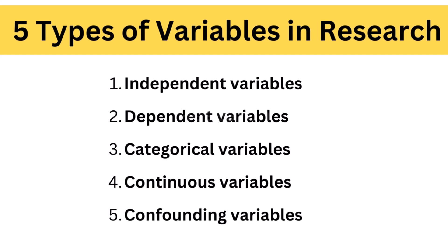The five types of variables include independent variables, dependent variables, categorical variables, continuous variables, and confounding variables.